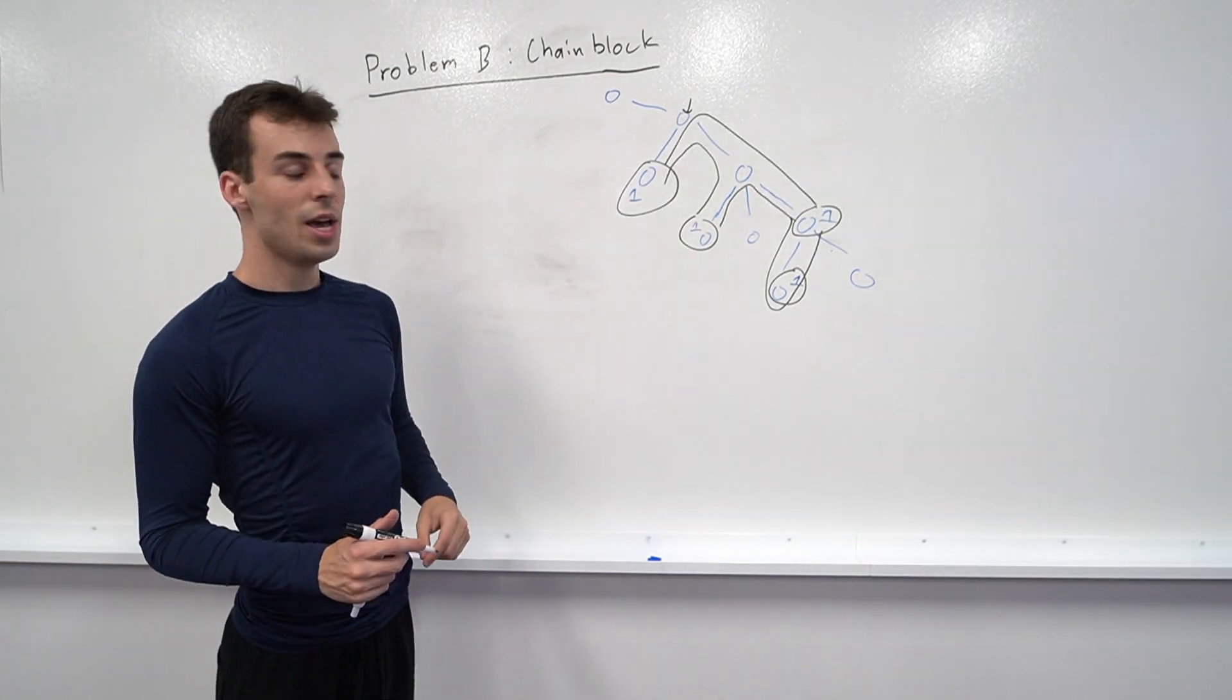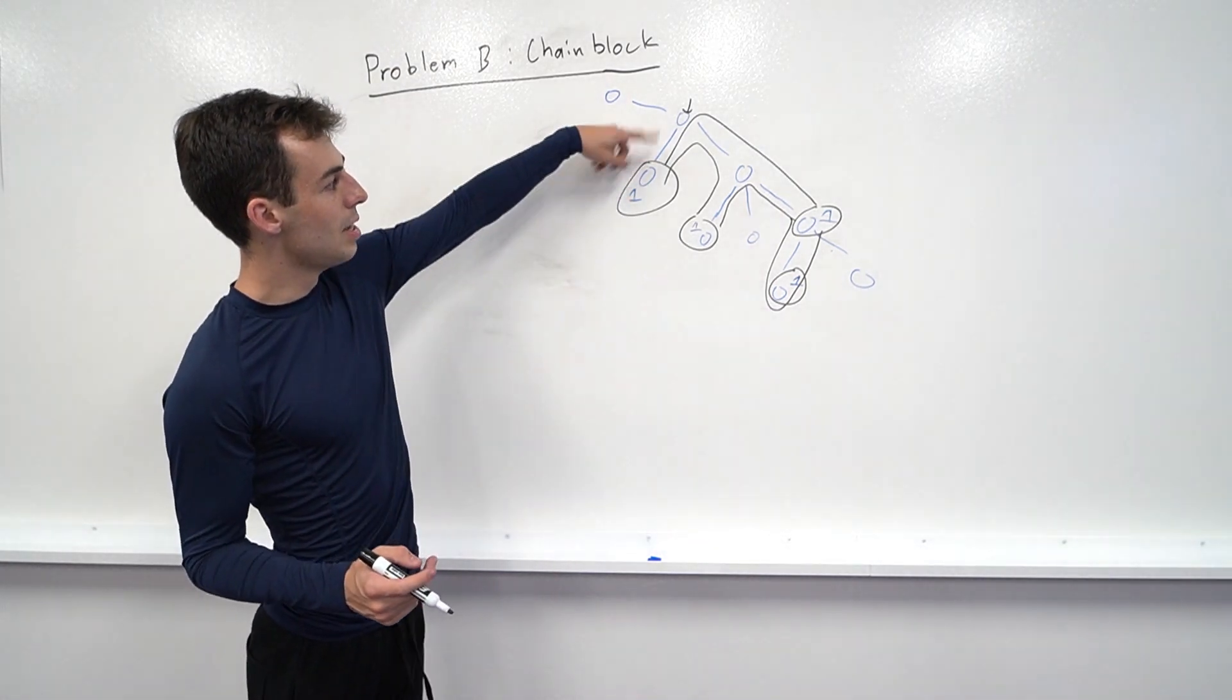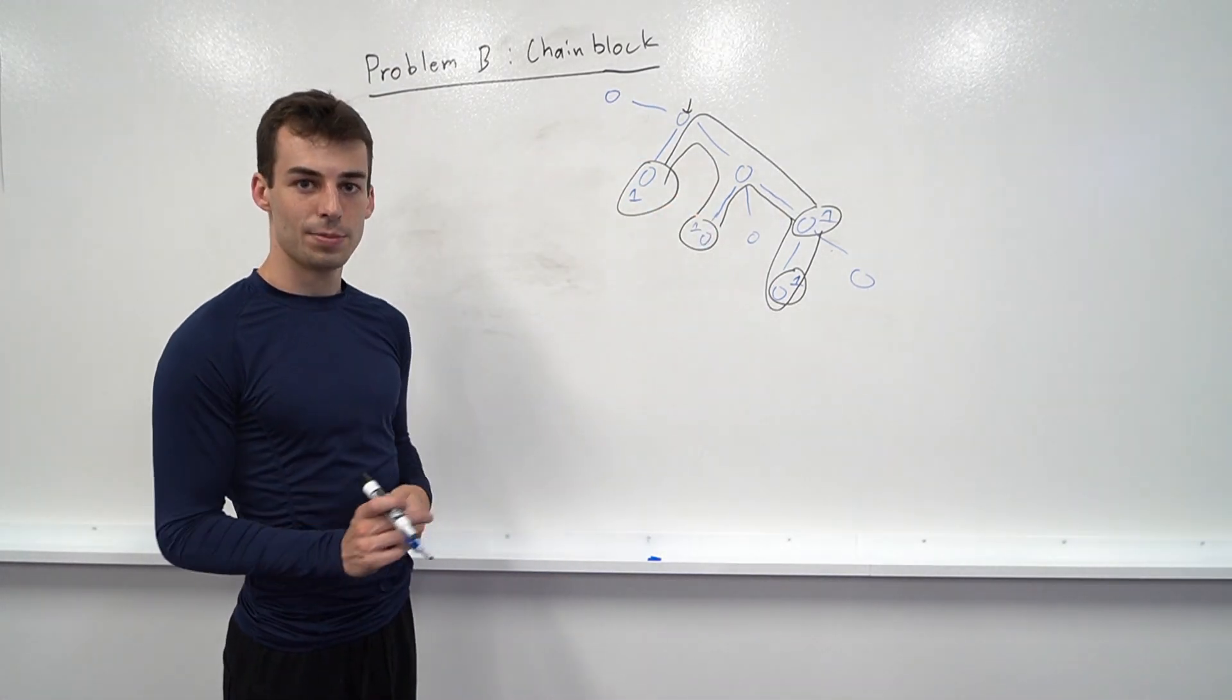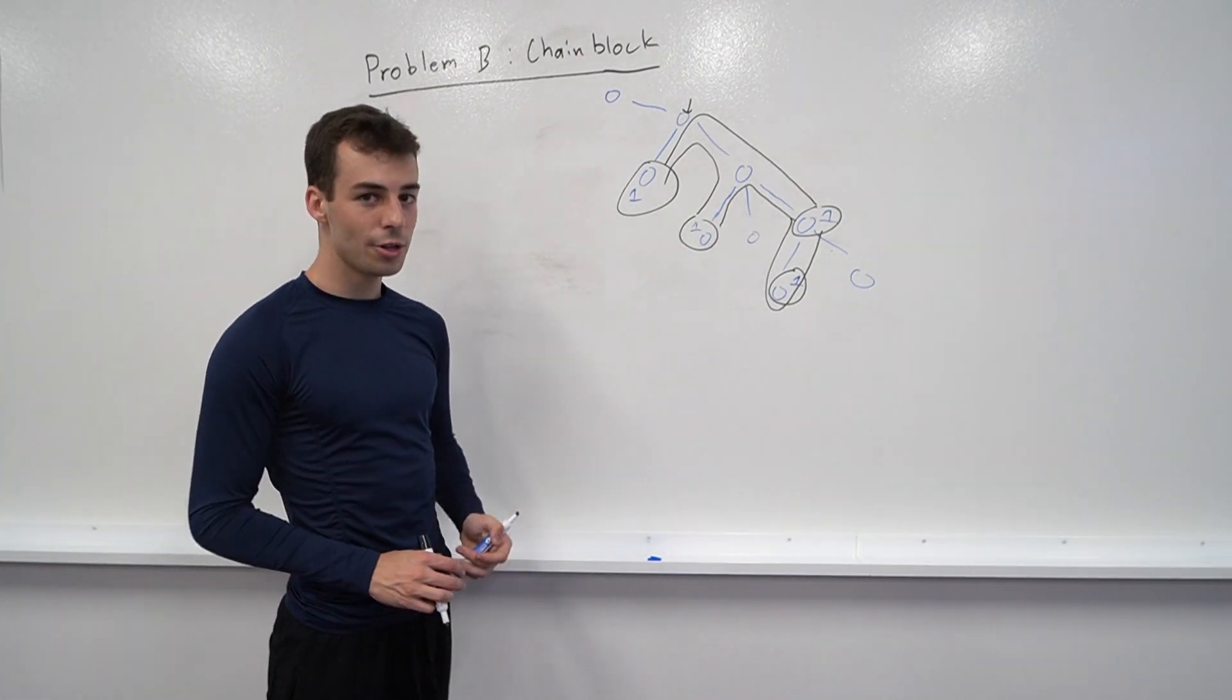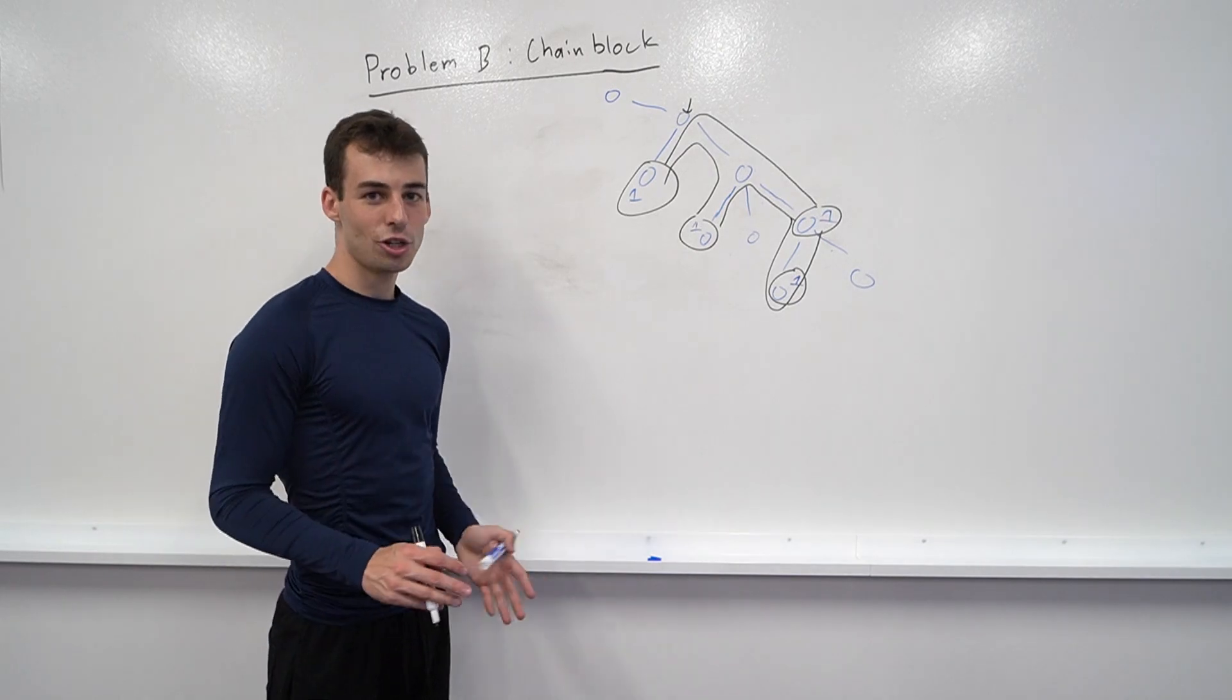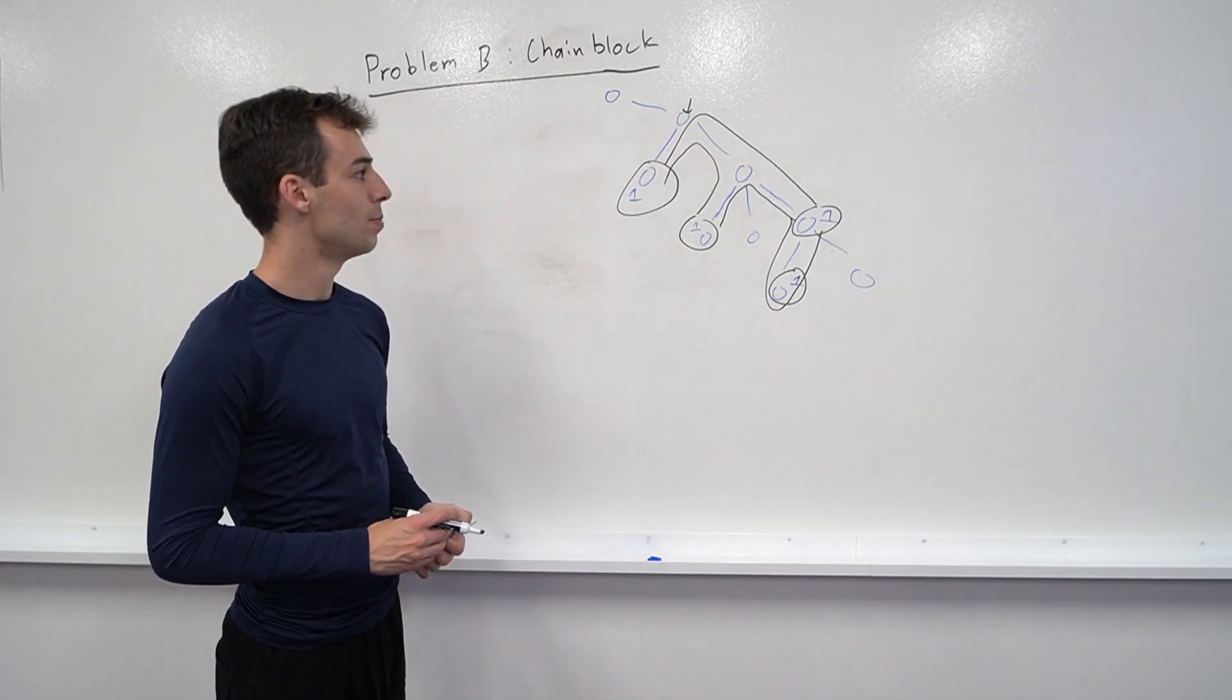So this will give us the lowest common ancestor. Now we have to say, how do we keep all of these paths, right? How do we mark all of these paths as being kept? And you can do this using a bunch of methods. You can use a very complicated data structure, you can use something like HLD, but all of those are kind of overkill for this particular problem.